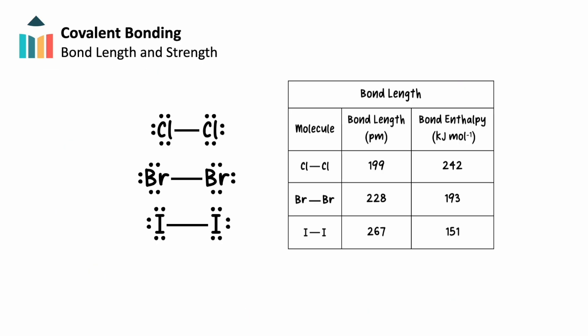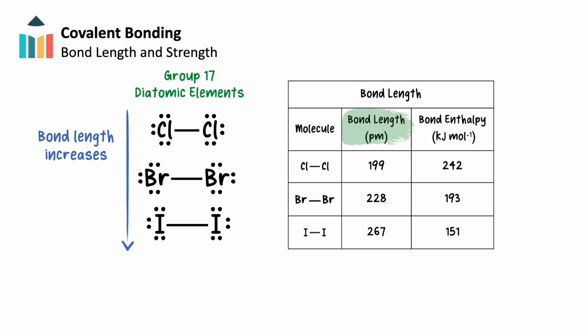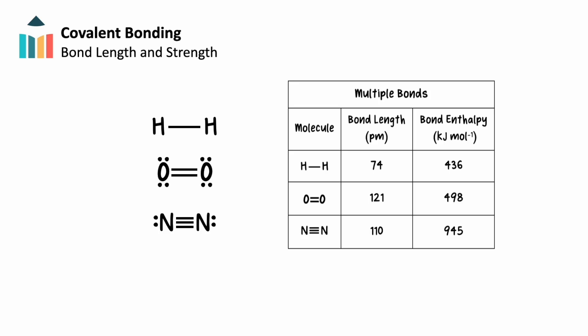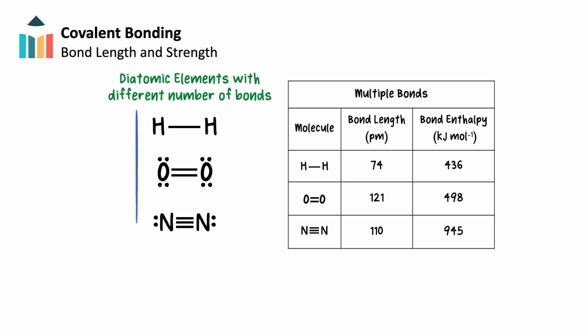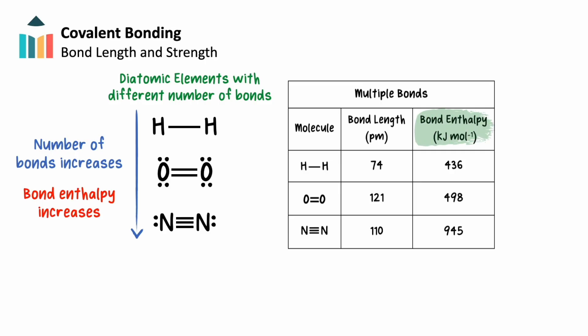We can see these trends by examining bond data of similar molecules. Group 17 halogens, for example, are diatomic molecules only containing single bonds. As we go down group 17, our atoms increase in their number of electron shells, and therefore atomic radius. We see the bond length of our diatomic molecules increase alongside this trend, followed by an overall decrease in their respective bond strengths, shown as decreasing bond enthalpy values. In comparison, diatomic hydrogen, oxygen, and nitrogen allow us to see the effect of having different numbers of bonds, as they contain single, double, and triple bonds respectively. From our data, we can see that with each additional bond, the measured bond strength increases. Our singly bonded hydrogen has the lowest bond enthalpy, followed by molecular oxygen and then nitrogen.